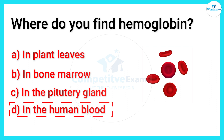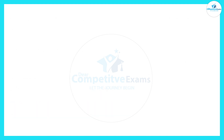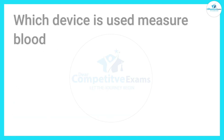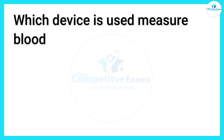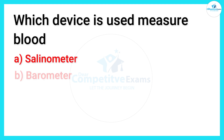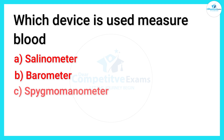Which device is used to measure blood pressure? Which equipment is used to measure BP? Your options are: salinometer, barometer, sphygmomanometer, or photometer.